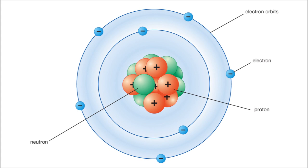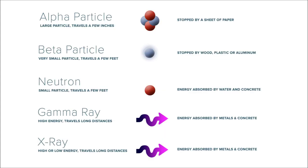Protons, possessing a positive charge, naturally repel each other in the nucleus due to the Coulomb force, and have to be bound in the nucleus by neutrons and the nuclear strong force. As elements go down the periodic table and the number of protons and neutrons increases, the strong force required to hold the protons in the nucleus also increases, and the elements become more and more unstable.